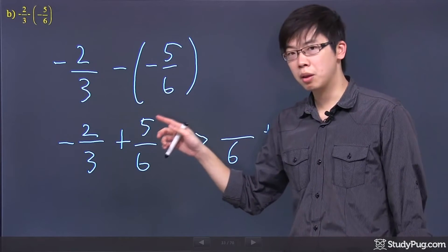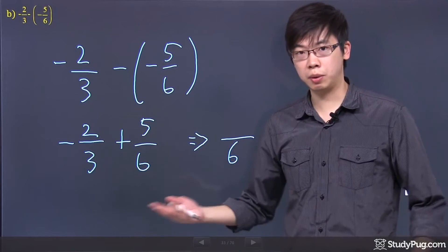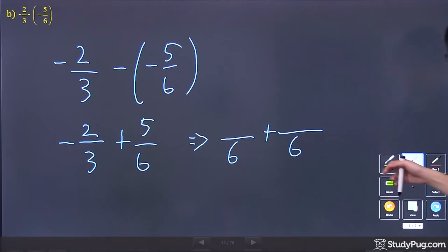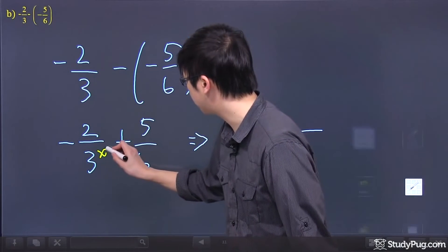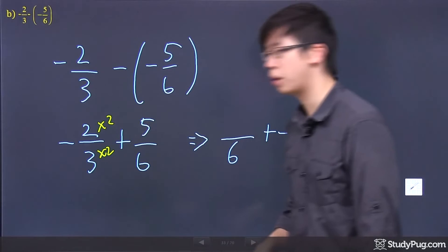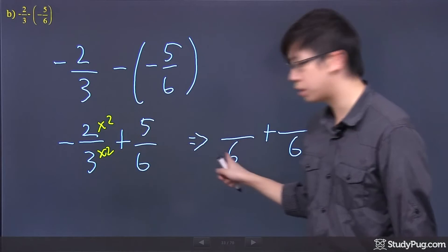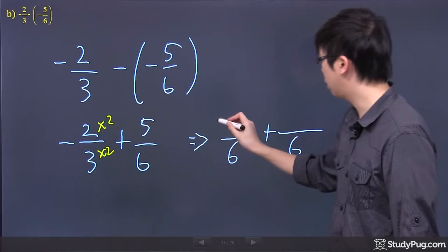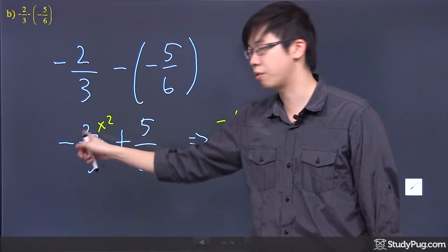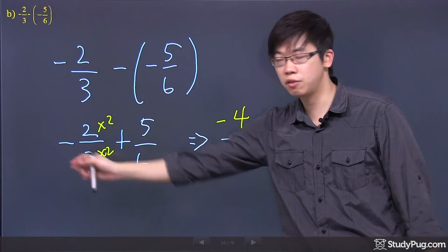So the 3 over here times by 2 to the top and bottom. So the work for here is this. I need to times this number by a 2, times that number by a 2 up top. So what I got is this. If that's 3 times 2 is 6, then the 2 times 2 is negative 4, because there's a negative in the front of that. So 2 times 2 is 4. There's also a negative.